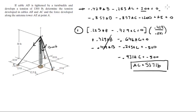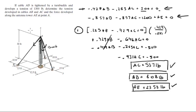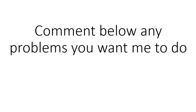Plugging AC = 537 pounds back into equation 1 gives AB = 808 pounds. Plugging both values into equation 3 gives AE = 2353 pounds, which is the force developed at the antenna. So our final answers are: tension in BAC = 537 and 808 pounds for the two sides, and the force developed at the antenna AE = 2353 pounds. Please comment below if you want me to do any problems and I'll be happy to help. Thank you.